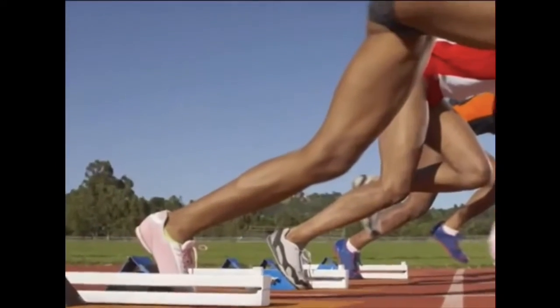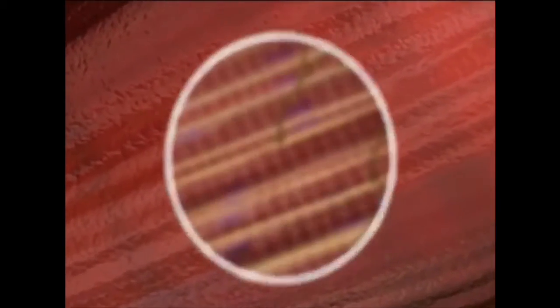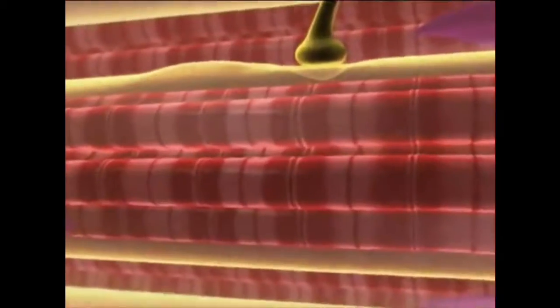We move our bodies by shortening or contracting our muscles. Let's take a closer look. A muscle consists of parallel muscle fibers. Each fiber is a single cell in close contact with a motor neuron.